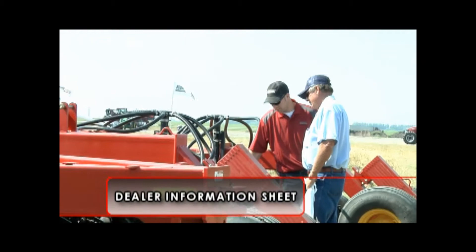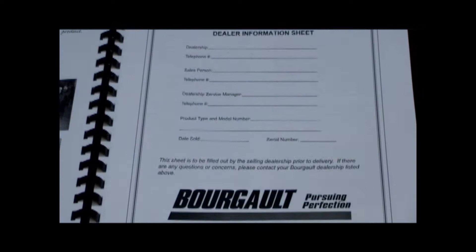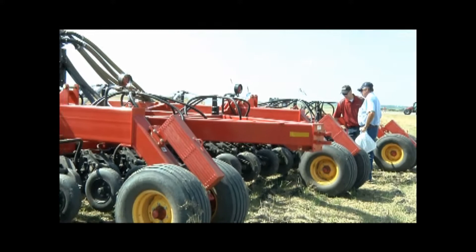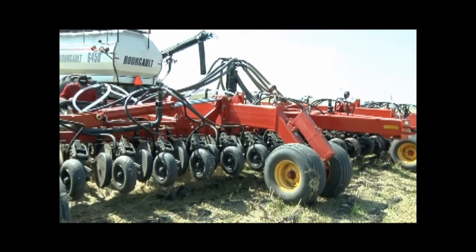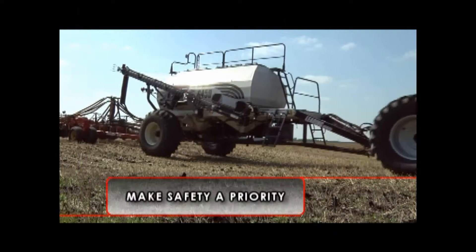It is important that the dealer has provided specific information and reviewed the unit with you prior to delivery. A dealer information sheet is located near the front of your operator's manual. Dealership and unit information is recorded on this page for easy reference if you require any warranty or parts service for your Bourgault unit.